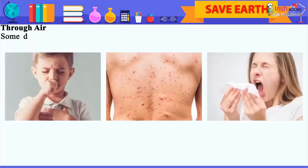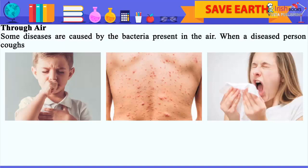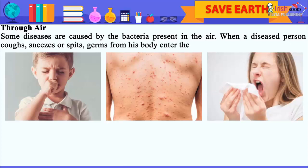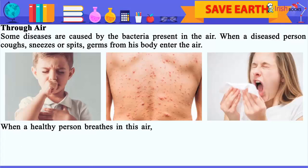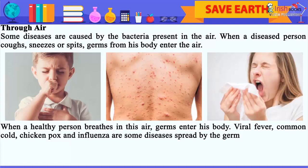We get infected due to various reasons. Through air: Some diseases are caused by the bacteria present in the air. When a diseased person coughs, sneezes or spits, germs from his body enter the air. When a healthy person breathes in this air, germs enter his body. Viral fever, common cold, chicken pox and influenza are some diseases spread by the germs in the air.